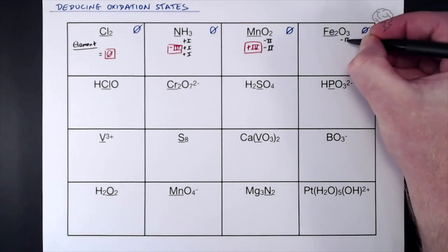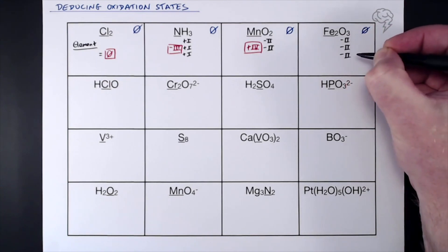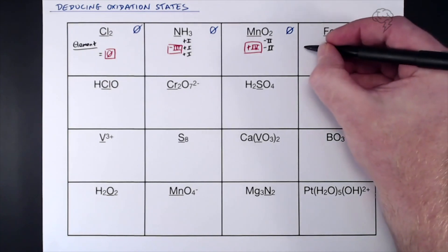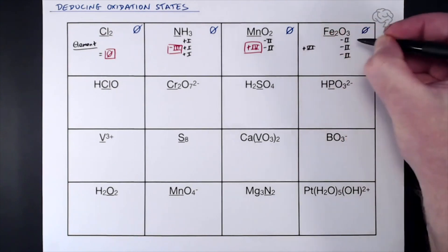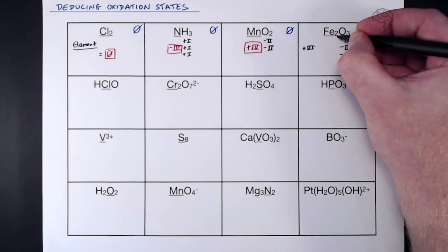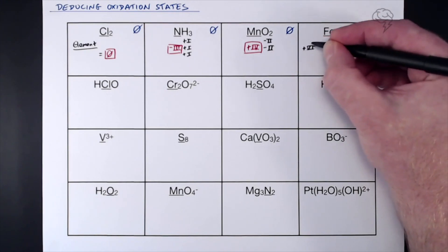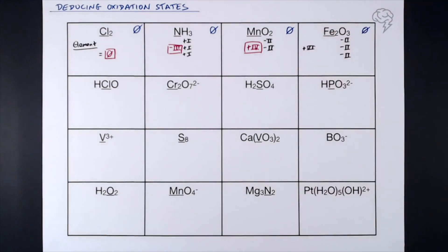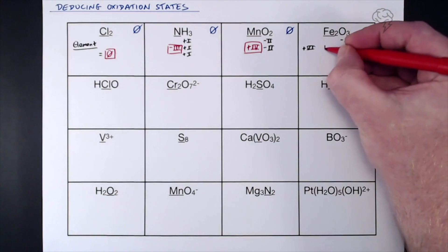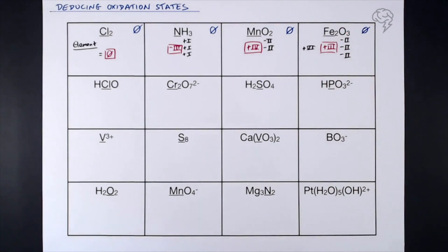Fe₂O₃ — overall oxidation state zero, no charge. It's the oxygen we know: we've got three of them, so three × (−2) = −6. The iron must account for +6. But there's a cheeky 2 — we've actually got two iron atoms in this formula. So +6 is accounted for by two irons, meaning each iron must be +3. This is iron(III) oxide.